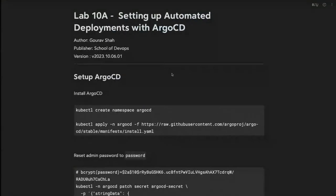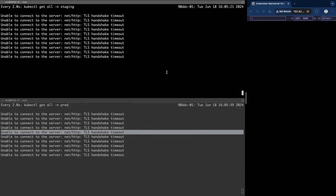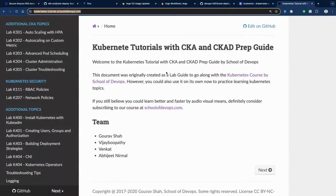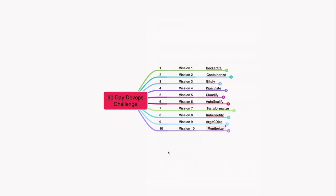Are there any questions about Argo CD or GitOps? Otherwise we'll wrap up a little early - Argo CD is a simpler topic. Next week we'll take up monitoring, demonstrating Prometheus and Grafana with Kubernetes, and if time permits, autoscaling based on custom metrics. That will be our final mission.